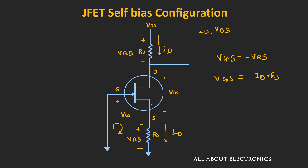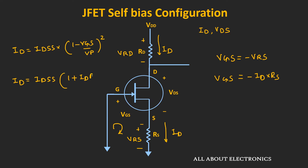Assuming the circuit operates in the saturation region, the drain current ID is given as IDSS times (1 − VGS/VP)². Substituting the expression for VGS, the drain current becomes IDSS times (1 + ID·RS/VP)². Solving this gives a quadratic equation of the form A·ID² + B·ID + C = 0. Solving the quadratic yields the value of ID, after which we can find VDS by applying KVL in the outer loop.